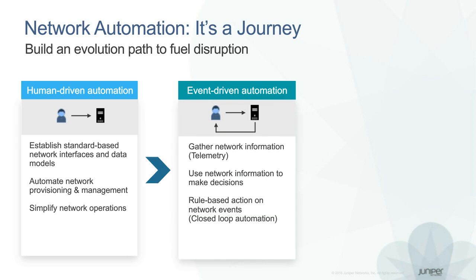The next stage of automation evolution is event-driven automation. Many industries — namely oil, gas, aviation, and manufacturing — have already taken steps toward event-driven automation. They compiled the knowledge from respective subject matter experts in their industry and codified it, then used this code to automate basic, manual, and repetitive tasks where systems perform themselves with little human interaction.